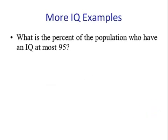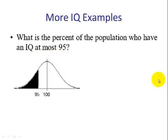Next example. What is the percent of the population who have an IQ score at most 95? At most means less than. So we draw our picture. The mean is 100 and it's in the middle. 95 is below 100. And we're wanting the area to the left, because we want at most and that means less than.